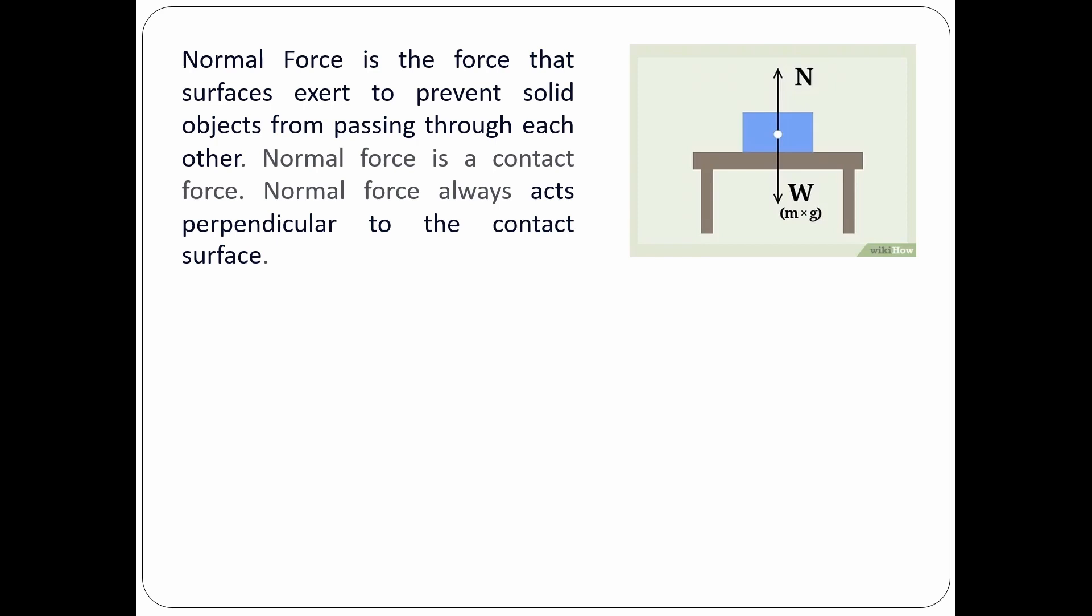Now the surface must be exerting an upward force on the box, and it is in the state of equilibrium. That means that the downward force must be canceled by an equal and opposite upward force. And this force is known as the normal force.